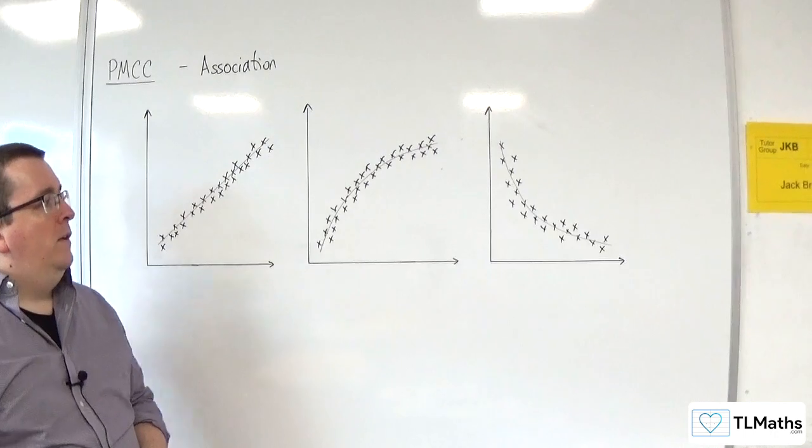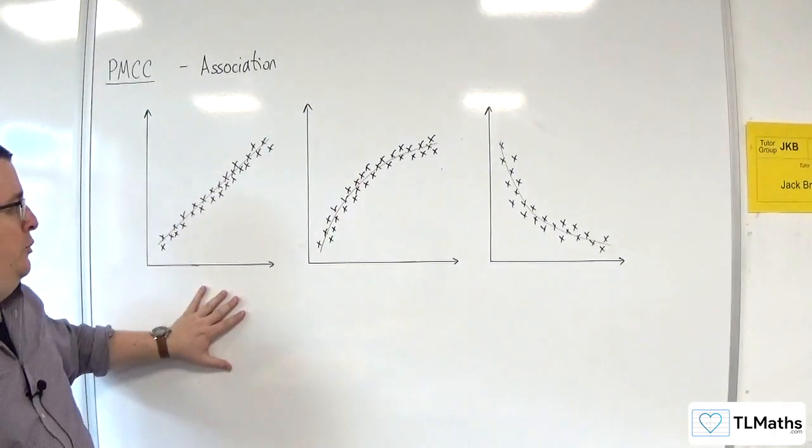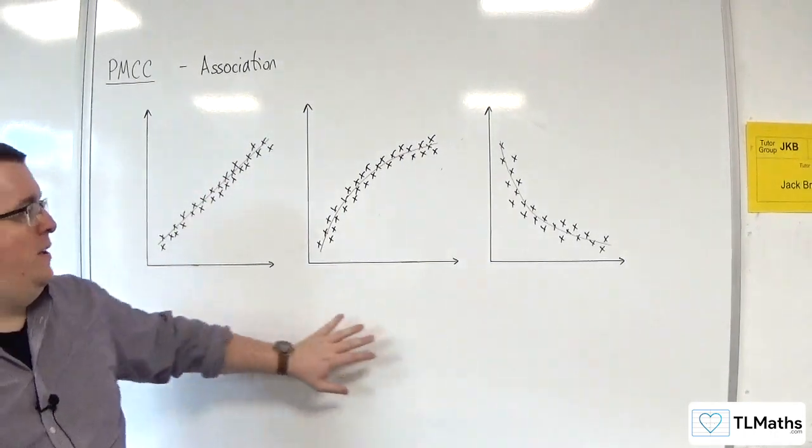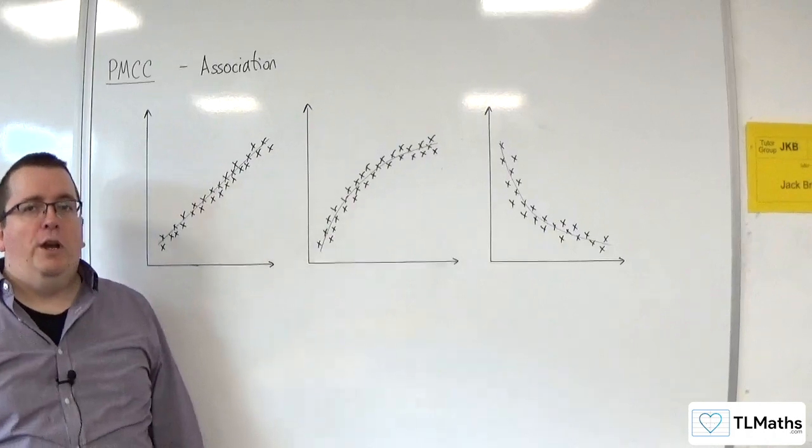So, here we have linear association, and here we have non-linear association.